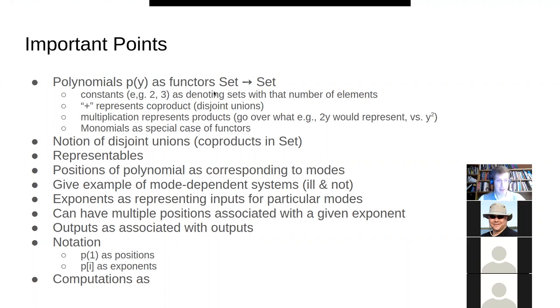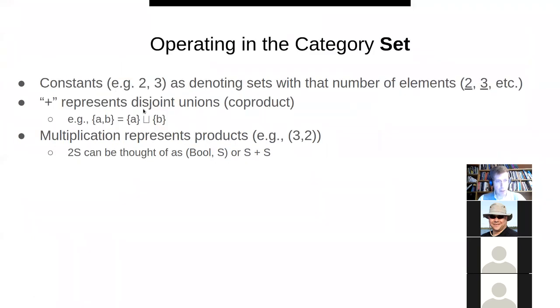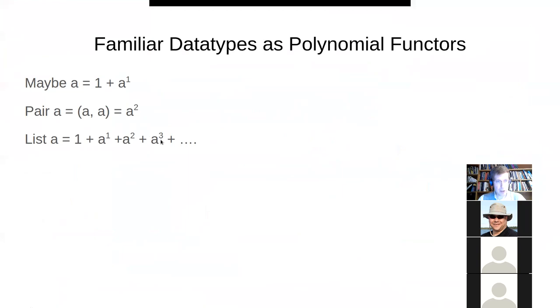So polynomials here, we're dealing with mappings from set to set. They shouldn't be too foreign - some of these things we've been dealing with are polynomials. Maybe is a polynomial, it's one plus a. One represents nothing, a is just the data type, so we have an int or we have nothing. This plus can be read as 'or', it's a disjoint union in sets, something similar in Haskell, like a tagged union or disjoint union.